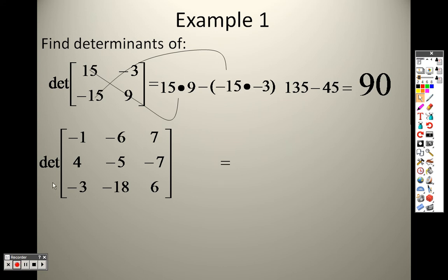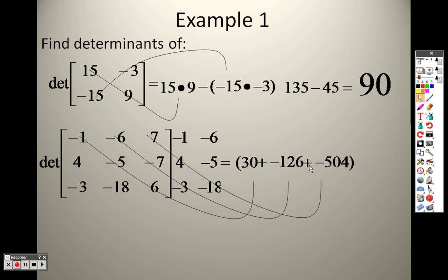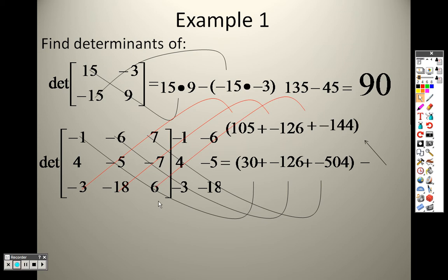A determinant of a 3 by 3, I need to take the first two columns and write them on the outside. So it's down minus up. I multiply all three of those to get 30, then negative 126, then negative 504, and add them all together. Minus, I multiply all three of these to get 105, then negative 126, then negative 144. So I take this number minus this number up here, which is negative 165, and I end up with negative 765.